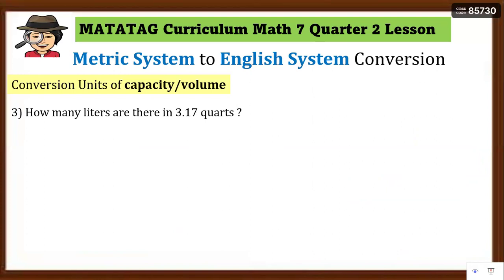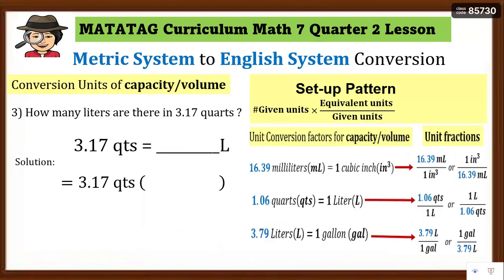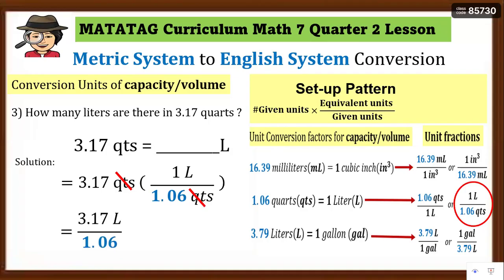Number 3: how many liters are there in 3.17 quarts? Write the equation and set up the pattern. Since the given unit is quarts and we need liters, the unit fraction must have quarts in the denominator and liters in the numerator to cancel quarts. We use 1 liter over 1.06 quarts. Set up, cancel quarts, then multiply: 1 liter times 3.17 = 3.17 liters, divided by 1.06 equals 2.99 liters.